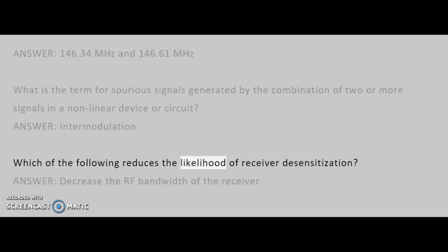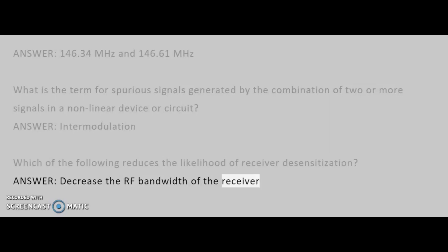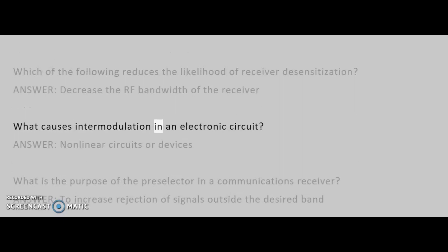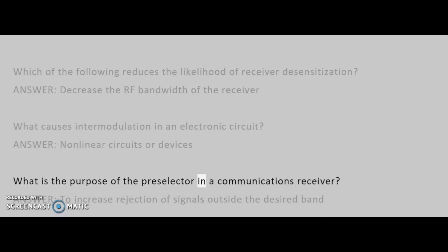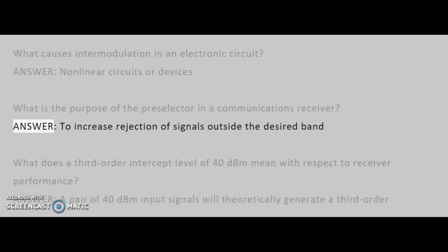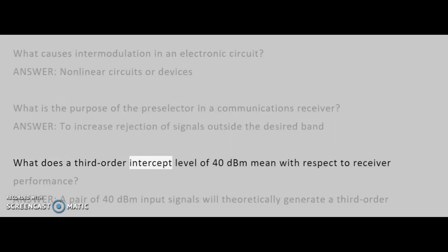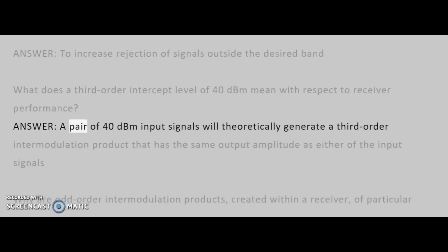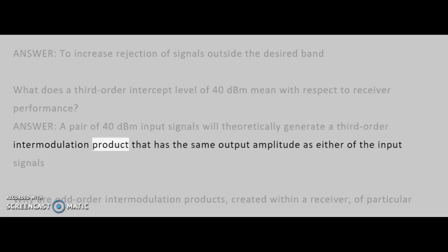Which of the following reduces the likelihood of receiver desensitization? Answer: Decrease the RF bandwidth of the receiver. What causes intermodulation in an electronic circuit? Answer: Non-linear circuits or devices. What is the purpose of the pre-selector in a communications receiver? Answer: To increase rejection of signals outside the desired band. What does a third-order intercept level of 40 dBm mean with respect to receiver performance? Answer: A pair of 40 dBm input signals will theoretically generate a third-order intermodulation product that has the same output amplitude as either of the input signals.